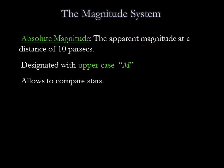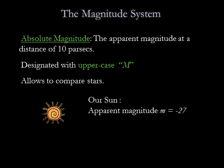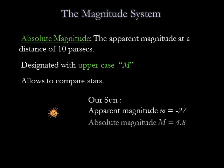The modern magnitude system also defines absolute magnitude as a way of describing stellar luminosities. A star's absolute magnitude is the apparent magnitude it would have if it were at a distance of 10 parsecs from Earth. For example, the Sun's apparent magnitude — how bright it appears to us — is minus 27. If we were to move the Sun to 10 parsecs away, it would appear dimmer and we would measure an apparent magnitude of 4.8. Therefore, the absolute magnitude of the Sun is 4.8.